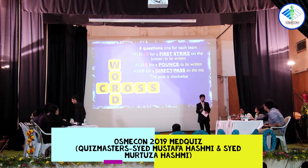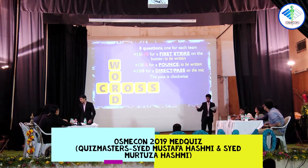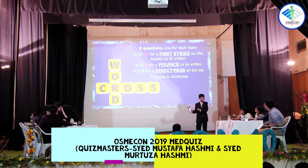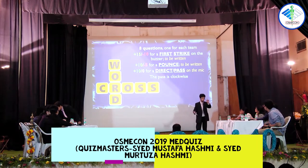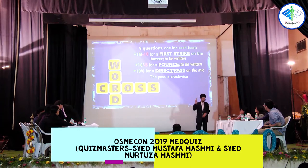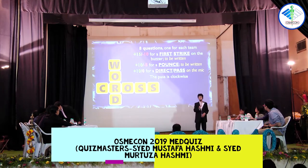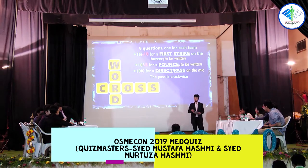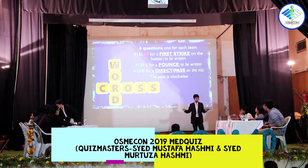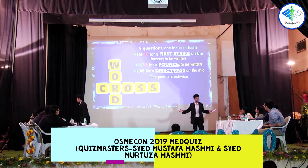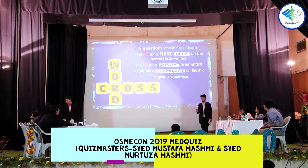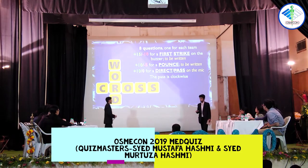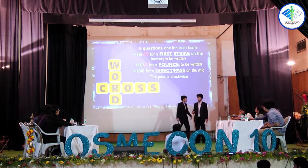There could be more than one part to the answer — A, B, and C. If you know only A and you buzz, you get minus 10. So answer only if you know the complete answer — give me all the parts on the pounce or first strike. On the direct or pass, you can give me whatever you know. You can have fun, let's crack jokes — I don't mind. But on the pounce or first strike, I want the complete answer for points. Otherwise it's straight flat negatives. I will not be generous here, unlike the prelims. You are the best — you are competing here in the finals.